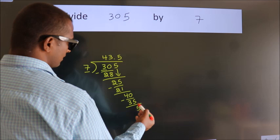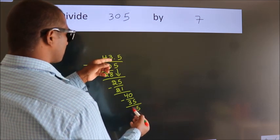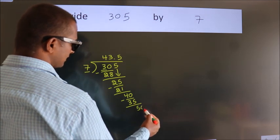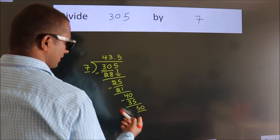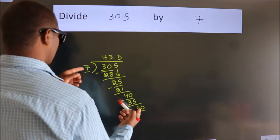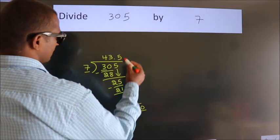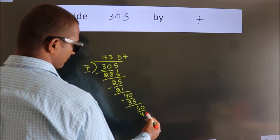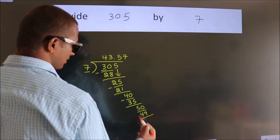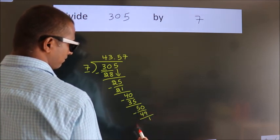After this, we already have the decimal, so we directly take 0, giving us 50. A number close to 50 in the 7 table is 7 sevens, 49. Now we subtract and get 1.